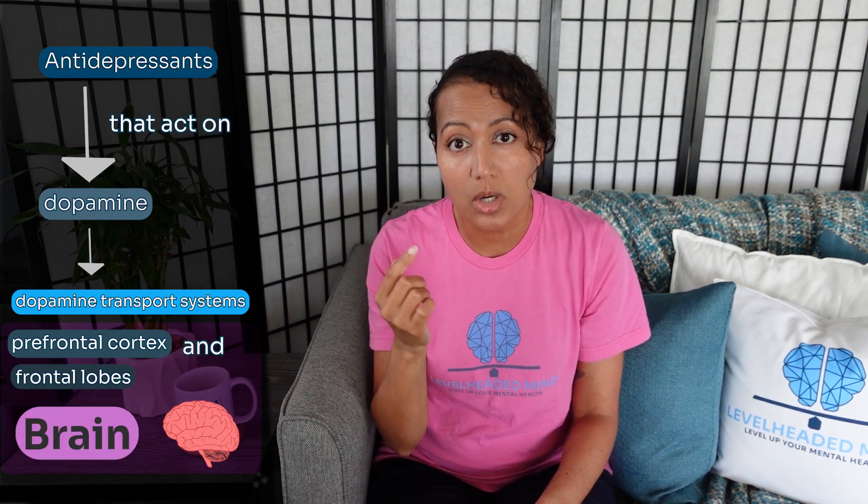Antidepressants have no action on dopamine in the reward area of the brain. Antidepressants that act on dopamine will increase it in the dopamine transport systems in the prefrontal cortex and frontal lobes, so there is no reward system being activated when taking an antidepressant. Addiction also has a component of tolerance; however, antidepressants have max dosages where therapeutic benefit is seen, and going higher than that dose will not provide more benefit — it only increases the risk of side effects.